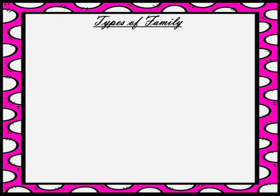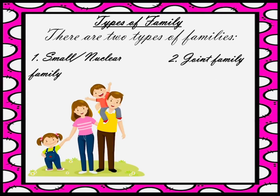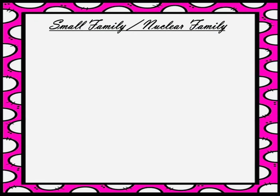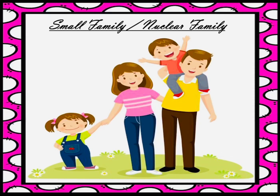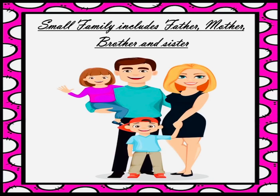Next we are going to study about types of families. There are two types of families. First is small or nuclear family, and second is joint family. Small family includes father, mother, brother and sister.